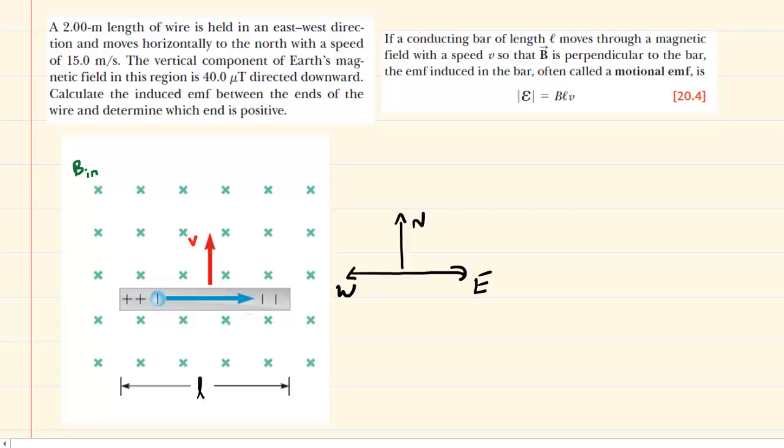You can imagine looking down on the wire from a bird's eye perspective. We have the wire moving horizontally to the north, so in this picture that's moving upward, as indicated by this velocity vector here. The wire is held in an east-west direction.